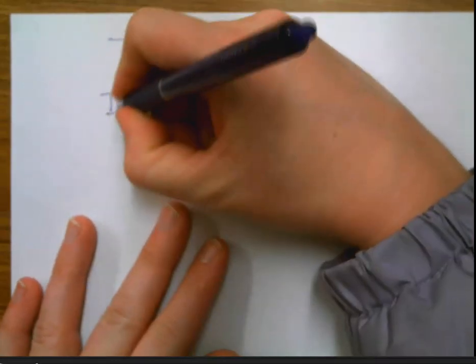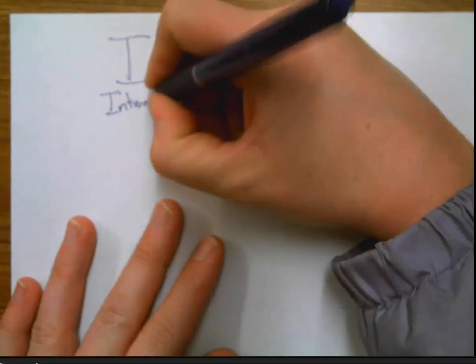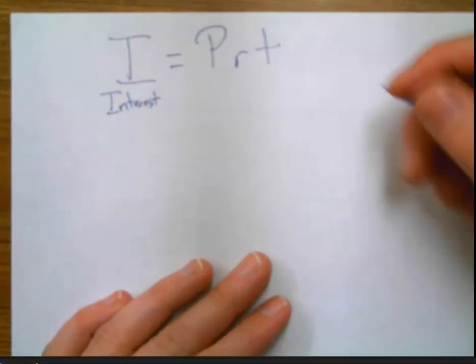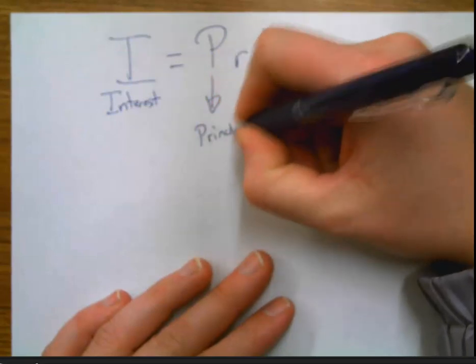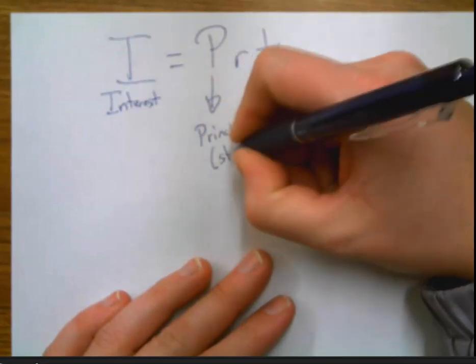Now remember the I is the interest. That's how much money you make or spend. P is the principal. That's your initial amount. That's your starting amount.